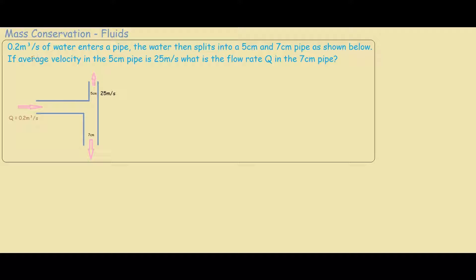We are also given the velocity of the water in the 5 centimeter pipe is 25 meters per second. Our question is: what is the flow rate in the 7 centimeter pipe?